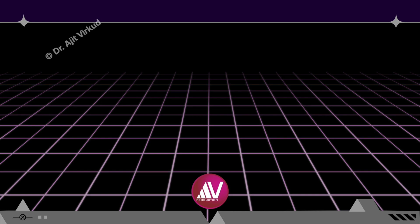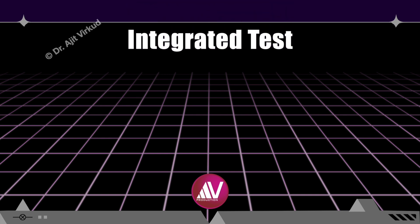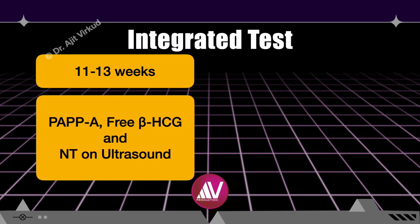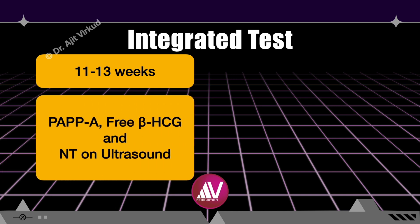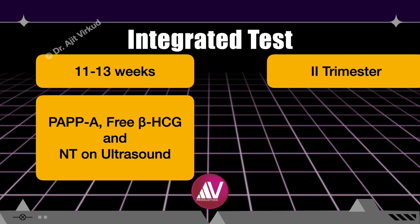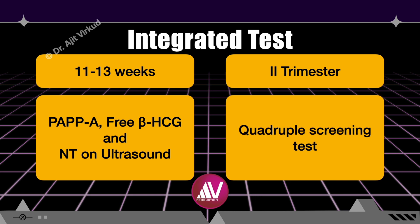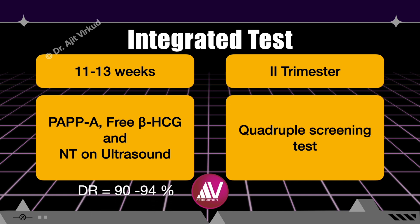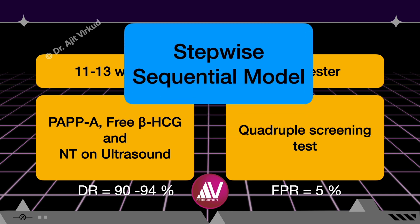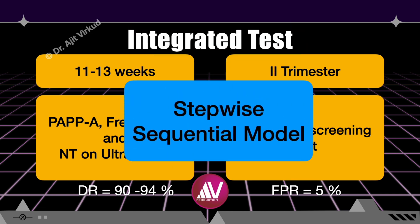A test commonly used in actual practice is the integrated test, which integrates first trimester PAPP-A, free beta-hCG, and nuchal translucency screening, followed by a second trimester quad screen, to receive a single combined result. The detection rate of this integrated test is 90 to 94 percent with a false positive rate of five percent. A limitation is the withholding of first trimester results until the second trimester result is available, which delays management options. A workaround is the stepwise sequential model.